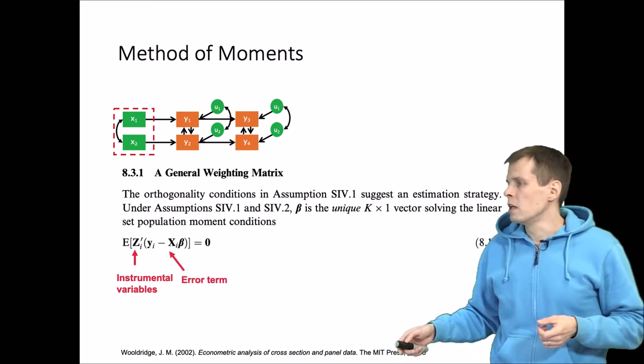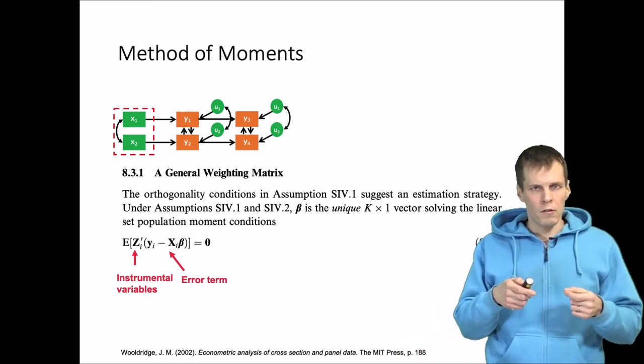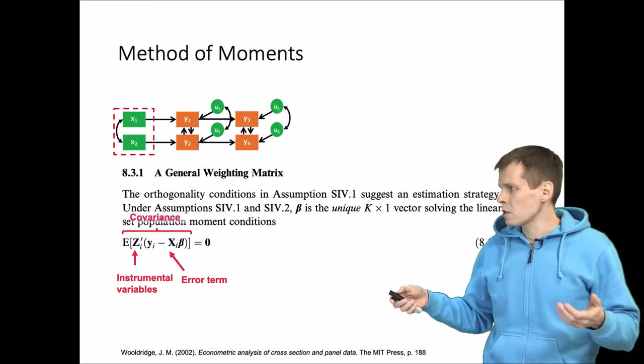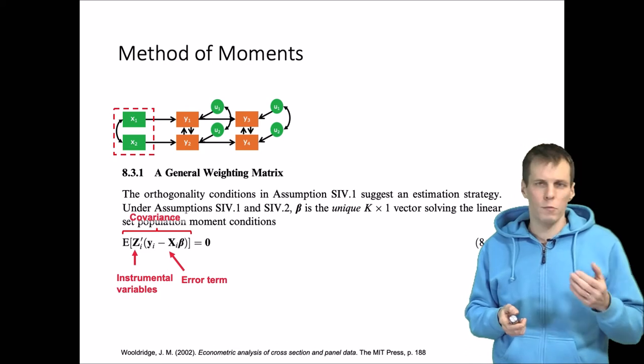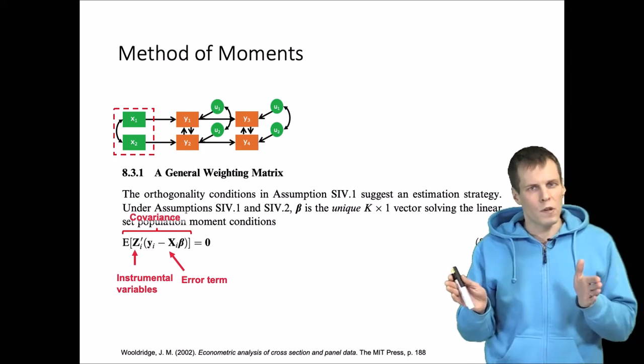This full expectation—we multiply two things together and take the expectation—that's roughly the covariance. So that is the covariance between instrumental variables and the error term, and we set that to zero.